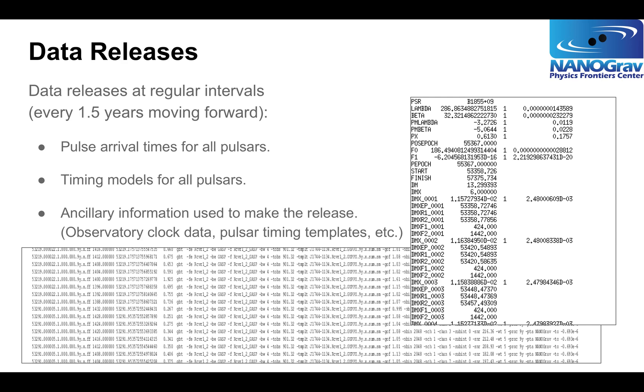The lists down here show some of the parameters of the timing solution for a given pulsar. We generate data releases, and going forward we're going to be doing that at intervals every one and a half years. A data release basically means a list of pulse arrival times for all pulsars. This little snippet shows one of those lists with an actual arrival time measurement as an MJD or Modified Julian Day, the radio frequency at which it was observed, the uncertainty of that measurement, the observatory, in this case the Green Bank Telescope, and a bunch of ancillary information.